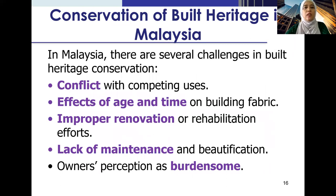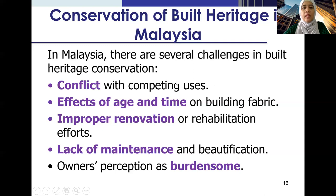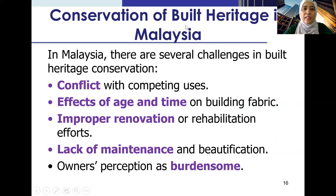Now, conservation of built heritage in Malaysia. In Malaysia, there are several challenges in built heritage conservation. Number one is conflict with competing users — for example in CBDs, competing users such as residential and commercial users all compete for prime land in the city center. Some older buildings may be of lower density or lower plot ratio than what is allowed, so developers have their eye on heritage sites. This threat hangs over heritage sites all the time, and it happens not only in Malaysia but all over the world.